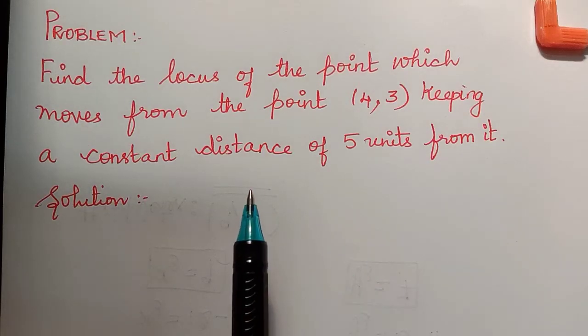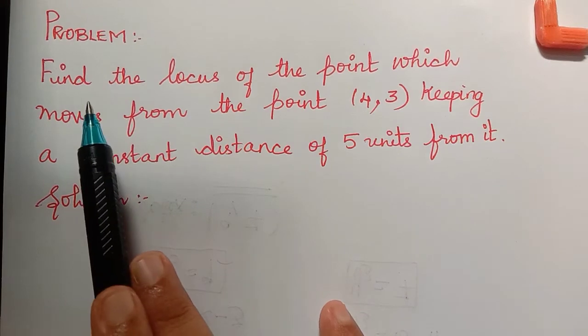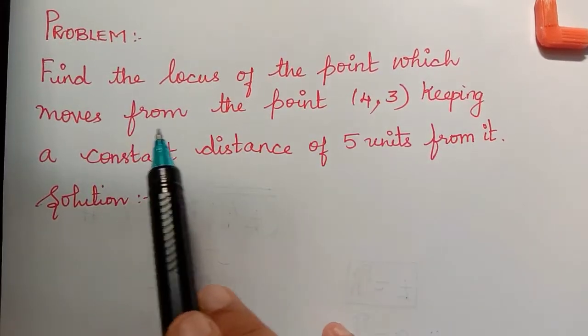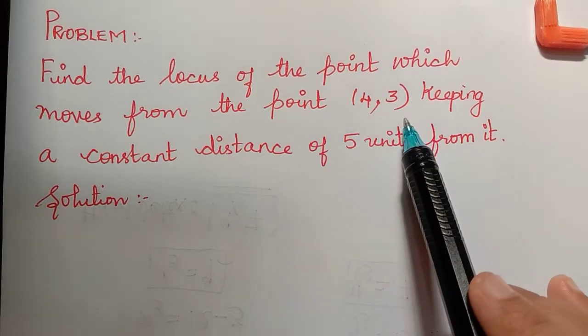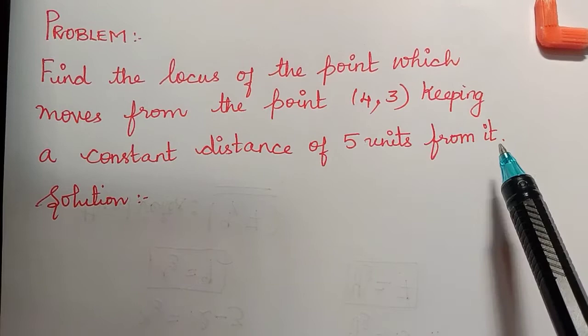Hello students, under the topic coordinate geometry we are dealing with the next problem. The problem is: find the locus of the point which moves from the point (4,3) keeping a constant distance of 5 units from it.